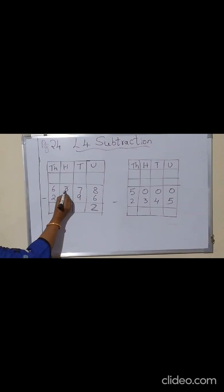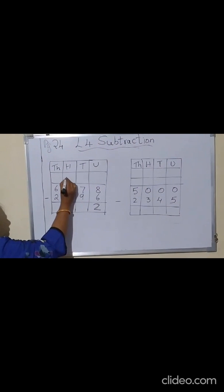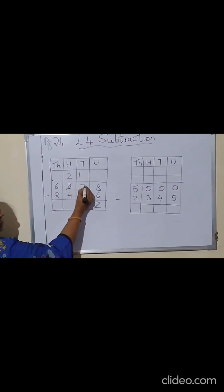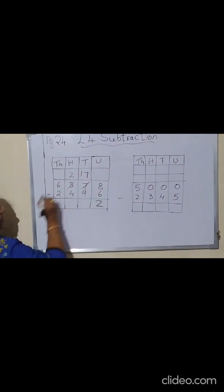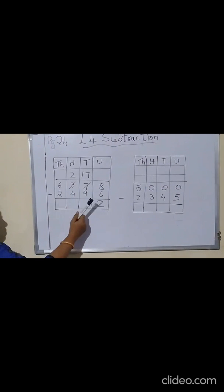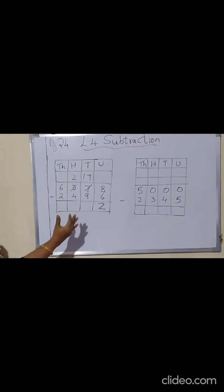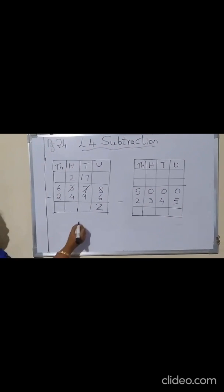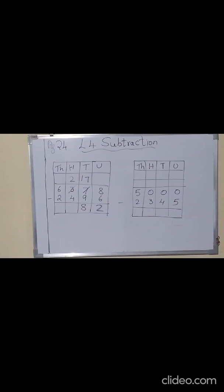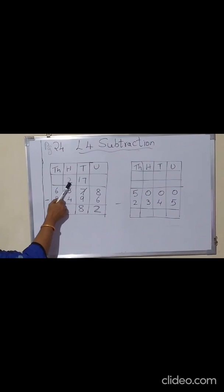That is, from 3 you have to remove 1 — that will become 2. So we will cut here, put a line over here, write 2, and this one will be given to this 7 — write 17. And now from 17 you have to minus 9 — that is, after 9 you count: 10, 11, 12, 13, 14, 15, 16, 17 — that is 8. So we will write 8 as the answer.